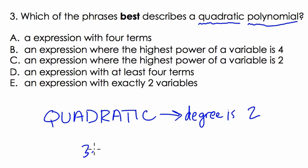Let's say we have 3x to the second plus 5x plus 4. This is a quadratic polynomial. Why? Because the degree is 2.